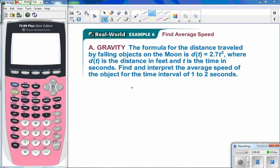Okay, here is a real world example. The formula for the distance traveled by falling objects on the moon is d of t equals 2.7 t squared. Where d of t is the distance in feet and t is the time in seconds. Find and interpret the average speed of the object for the time interval of 1 to 2 seconds. So to find the average speed, we're going to substitute the values in. So we're really looking for the slope of the secant line. So we're going to evaluate d of 2 minus d of 1 over 2 minus 1.